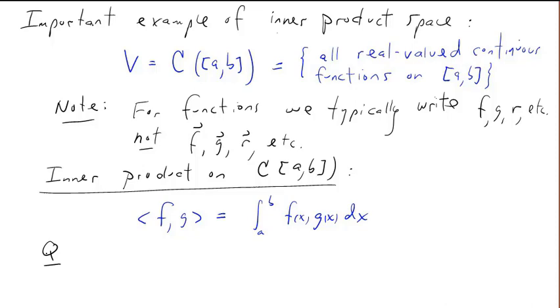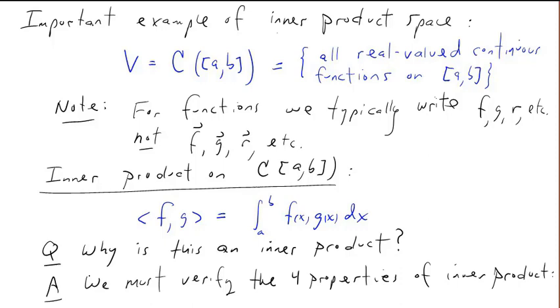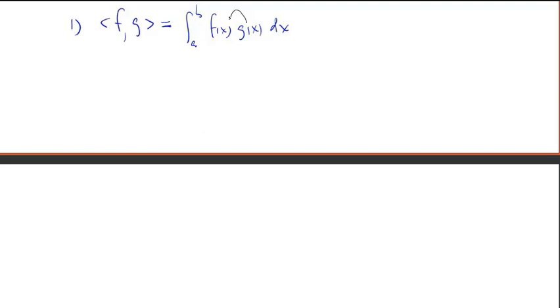To demonstrate that it's an inner product, we verify the four properties. Property one: the inner product of f and g is the integral from a to b of f(x)g(x) dx. By the commutative property of multiplication, we can switch the order and write that as the integral from a to b of g(x)f(x) dx, which is just the inner product of g and f.